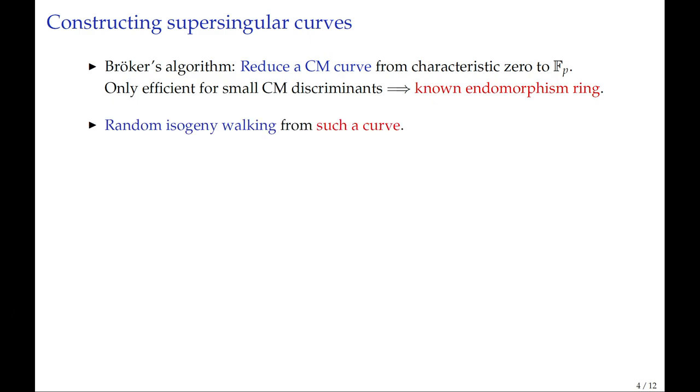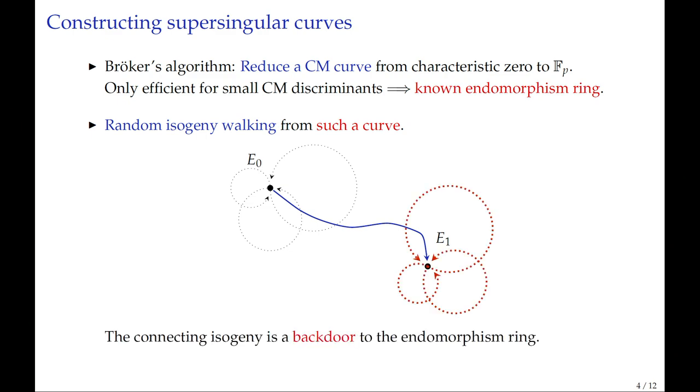There's one method to produce supersingular curves, it's a focused algorithm. It acts as a black box that outputs one of these curves. But the only practical cases where you can do this actually also immediately produce the endomorphism ring, so that's no good. You get an elliptic curve, but you also get the endomorphism ring.